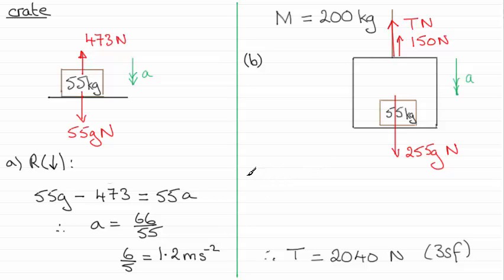So all we need to do then is resolve downwards in the direction of motion. And that turns out to be 255g minus the tension, minus T, minus the resistance, which was 150. That's the resultant force on the lift.